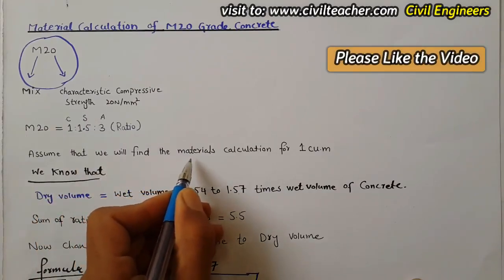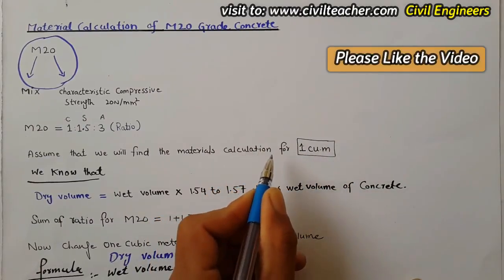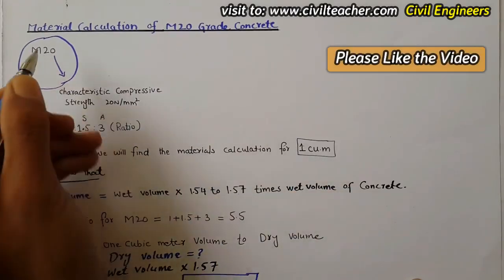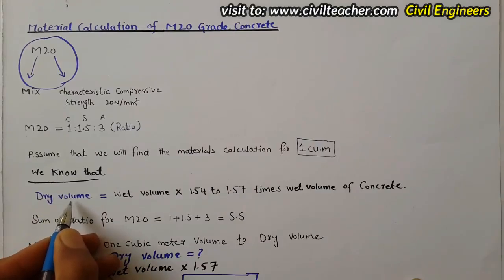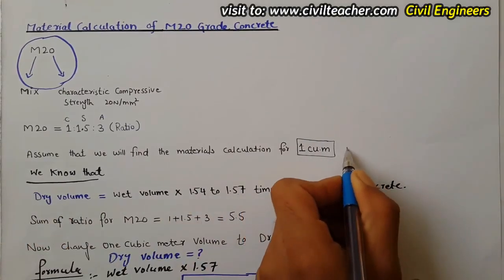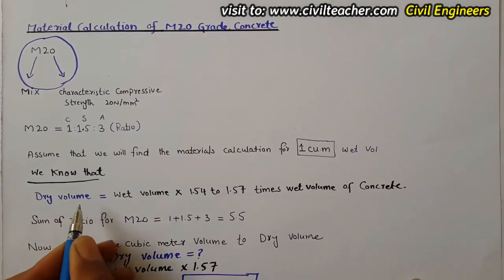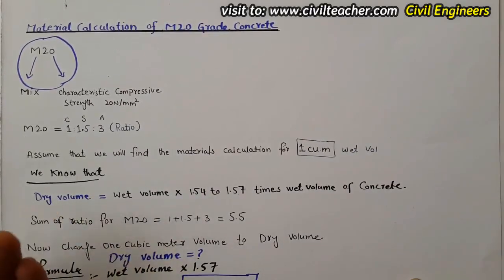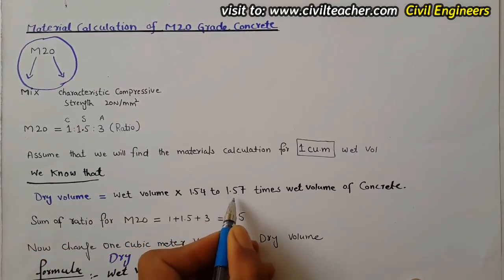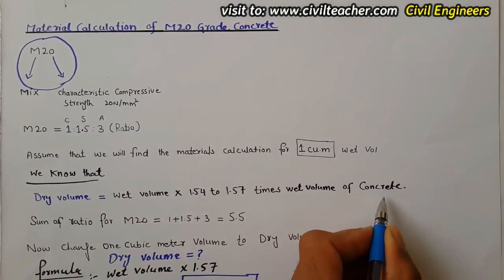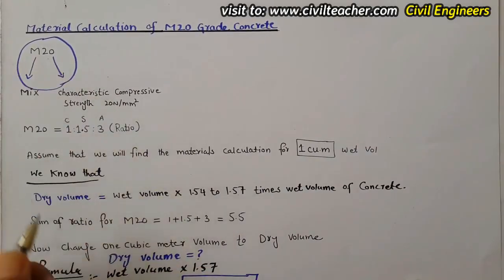We will find the material calculation for one cubic meter. Suppose I have to find out the material in one cubic meter for M20 grade of concrete. One cubic meter is the wet volume, and we have to convert it to dry volume, because we bring dry materials for concrete or construction work. The formula is: dry volume equals wet volume multiplied by 1.54 to 1.57.